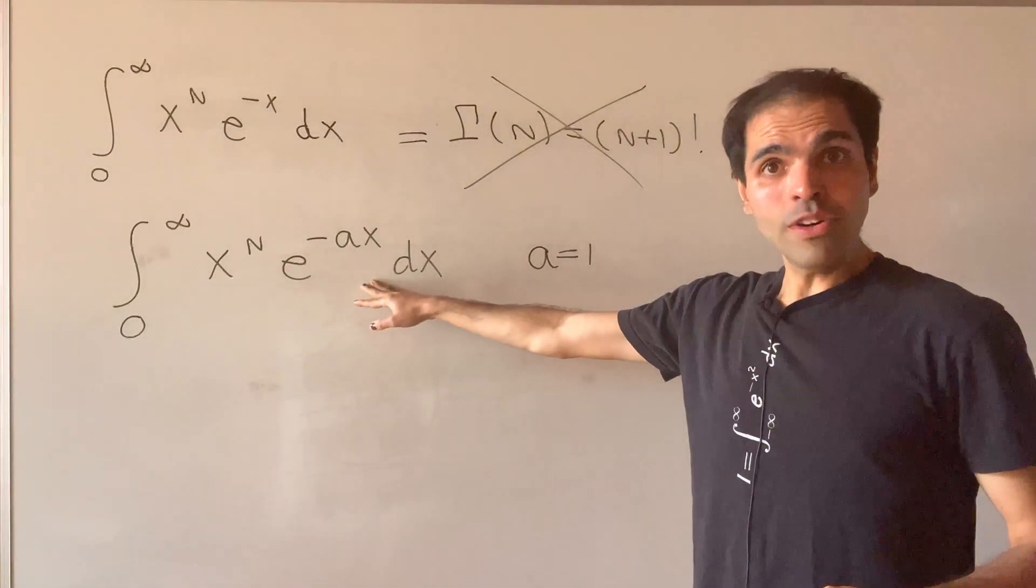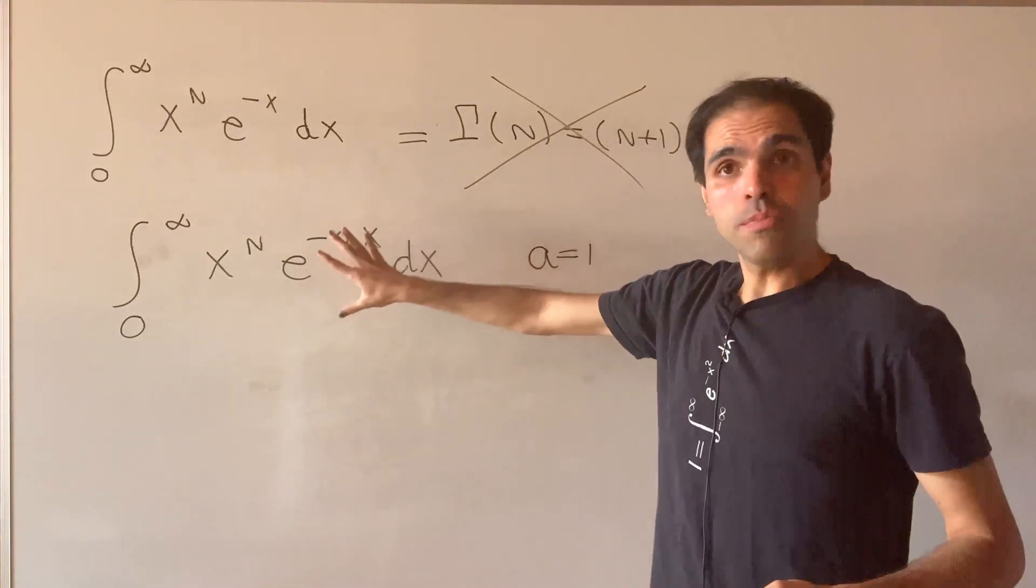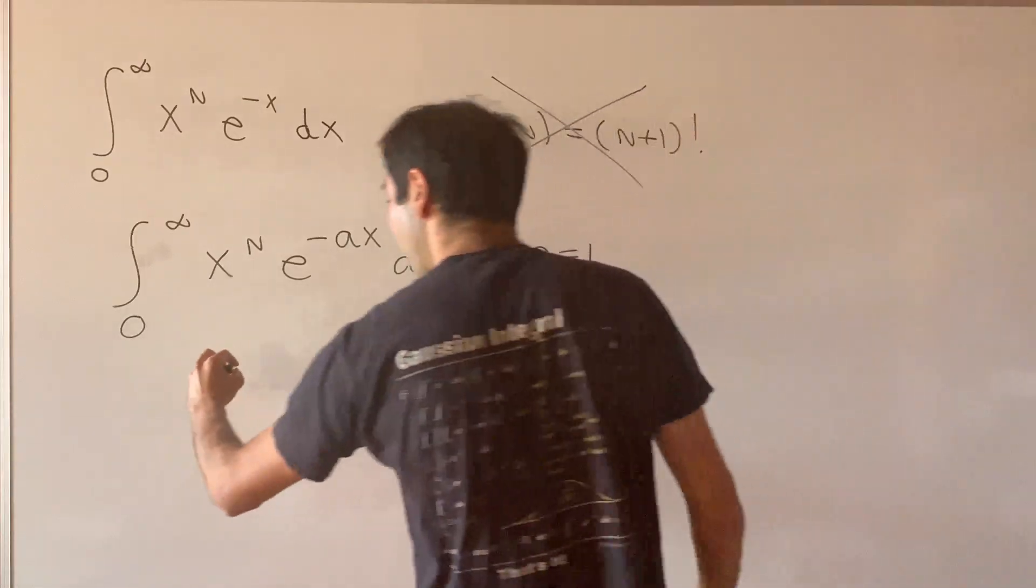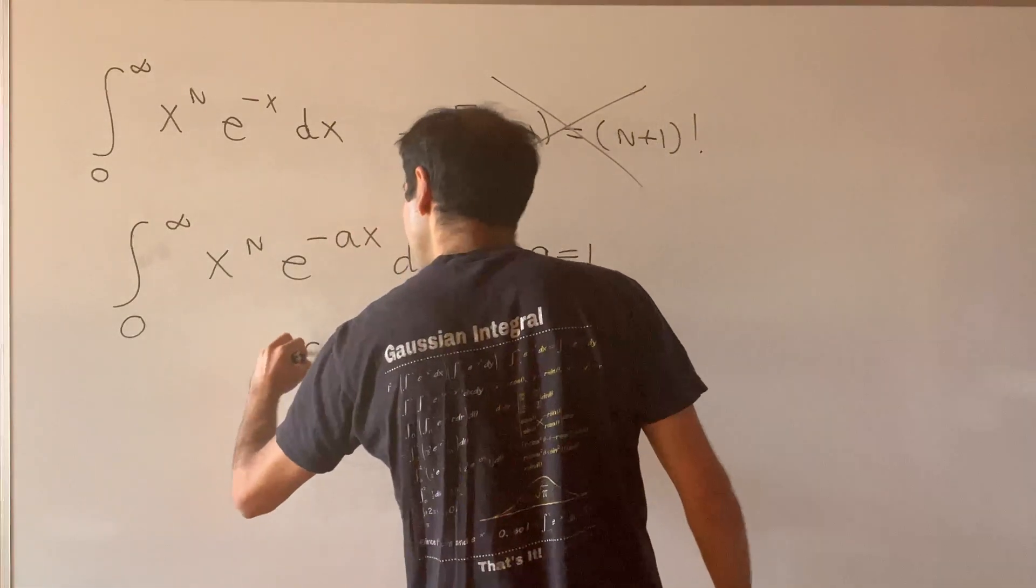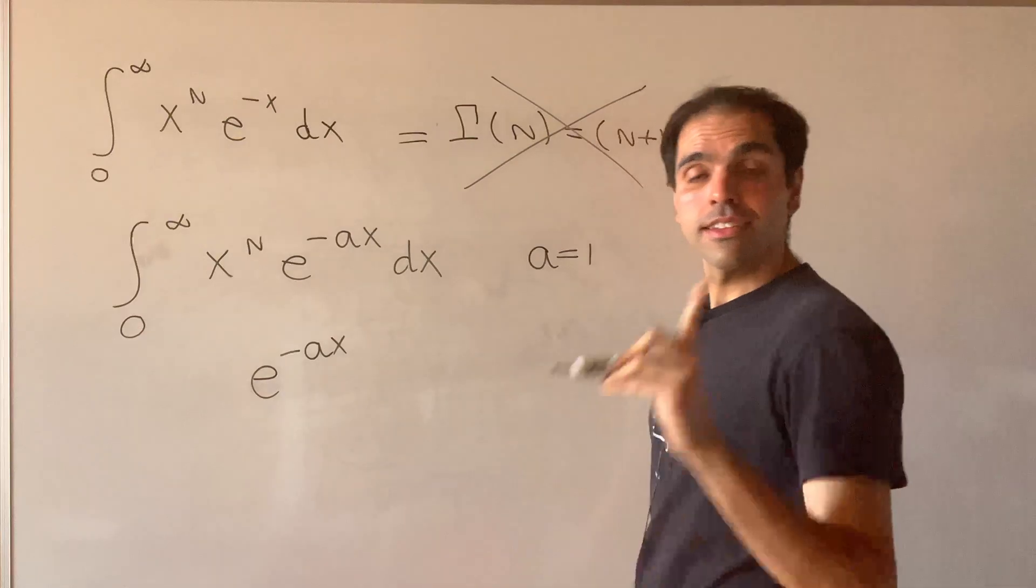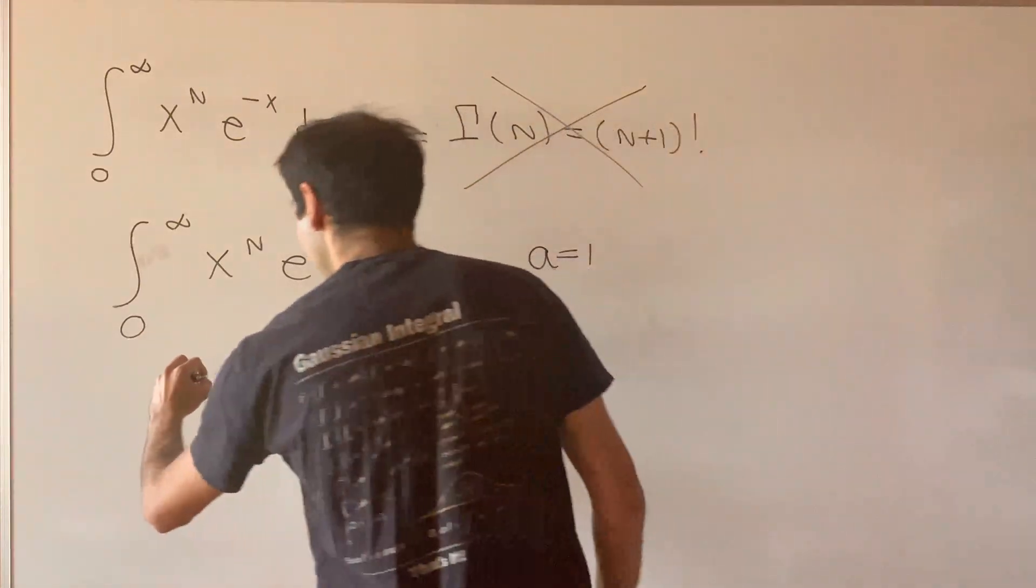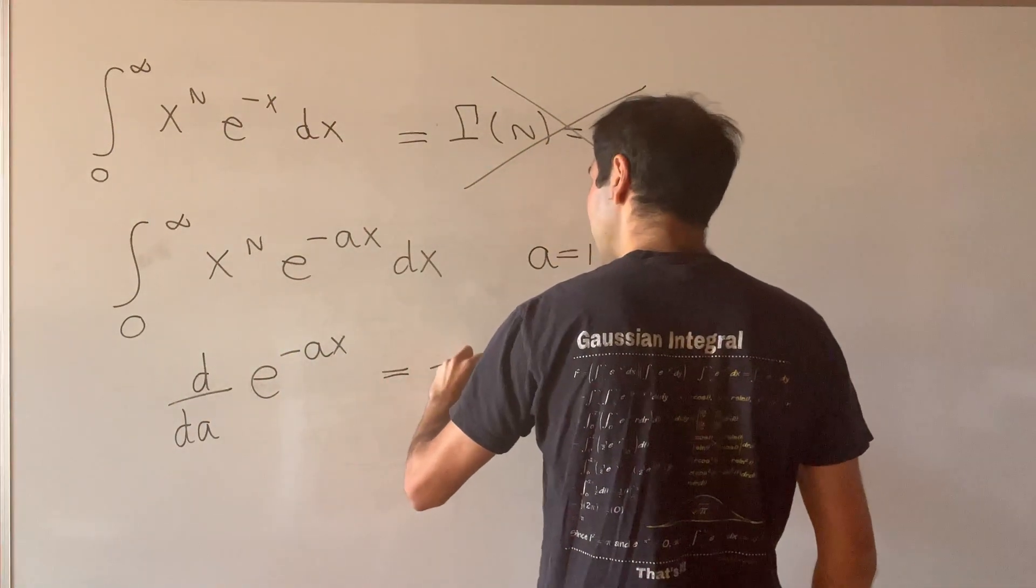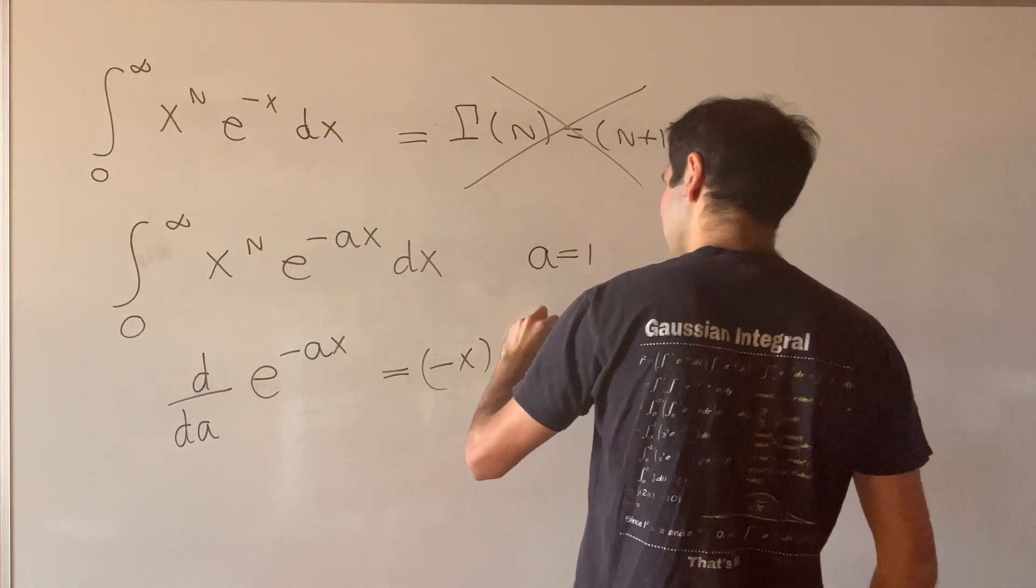Now, why do we do this? Because there's a beautiful derivative hidden inside this. Namely, if you calculate the derivative of e to the minus ax with respect to a and use the chain rule, then you get minus x times e to the minus ax.